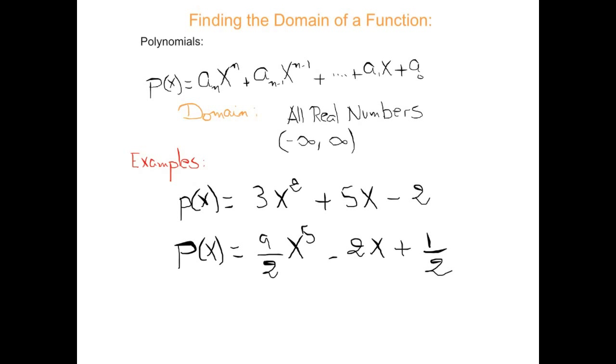As far as there is no x on the bottom of the fraction, you'll be good to go. You may also be asked to find a degree, like the first polynomial that I listed here. The degree is 2, and that's because that's the highest exponent you see on the polynomial. And the degree of the second one is 5 because that's the highest degree you could see also.